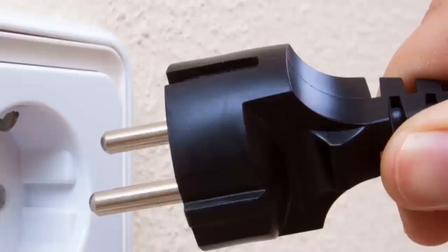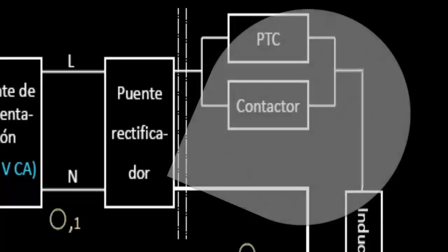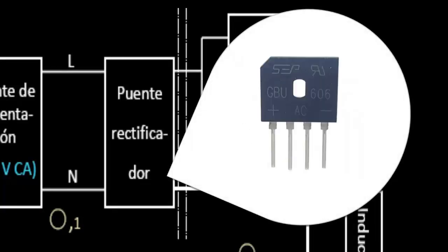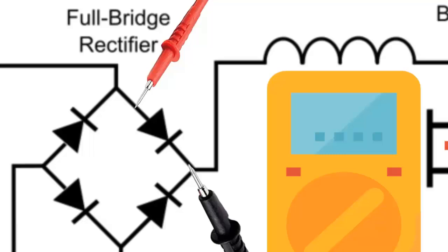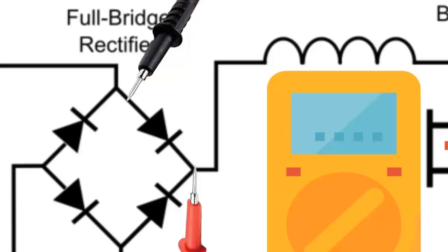Point 3: If the voltage in the previous point is not adequate, disconnect the board and wait a few minutes for the capacitors to discharge. Check each diode of the rectifier bridge. Remember that diodes only allow current to pass in one direction. Replace any damaged diodes or the rectifier bridge if necessary.